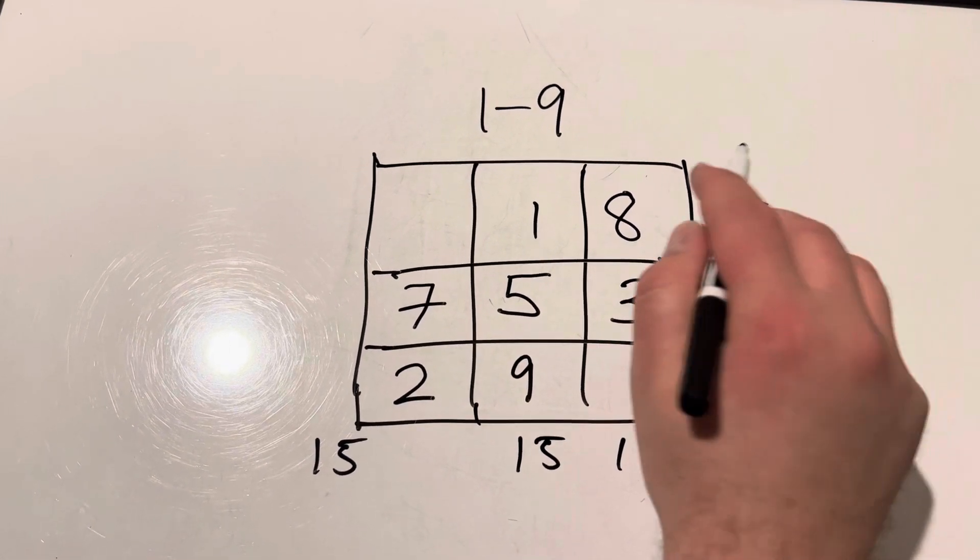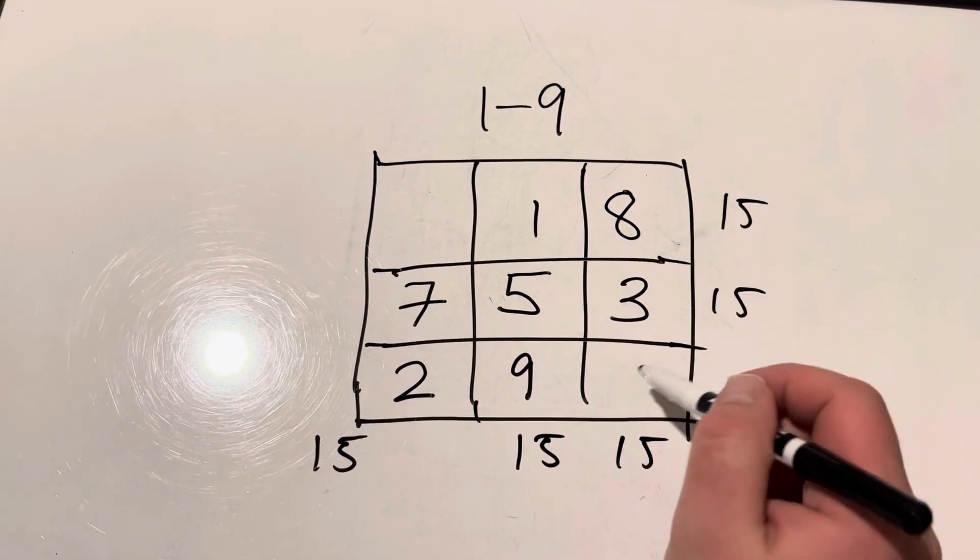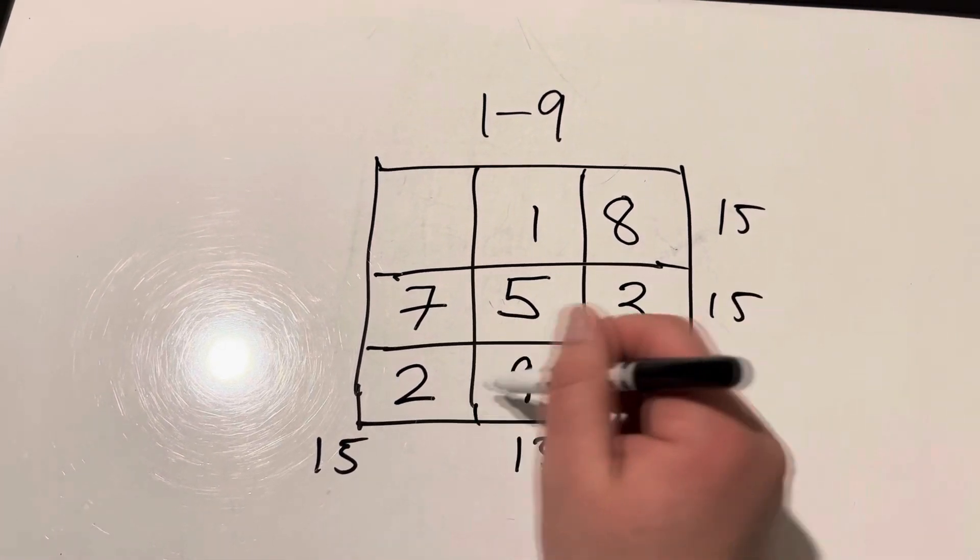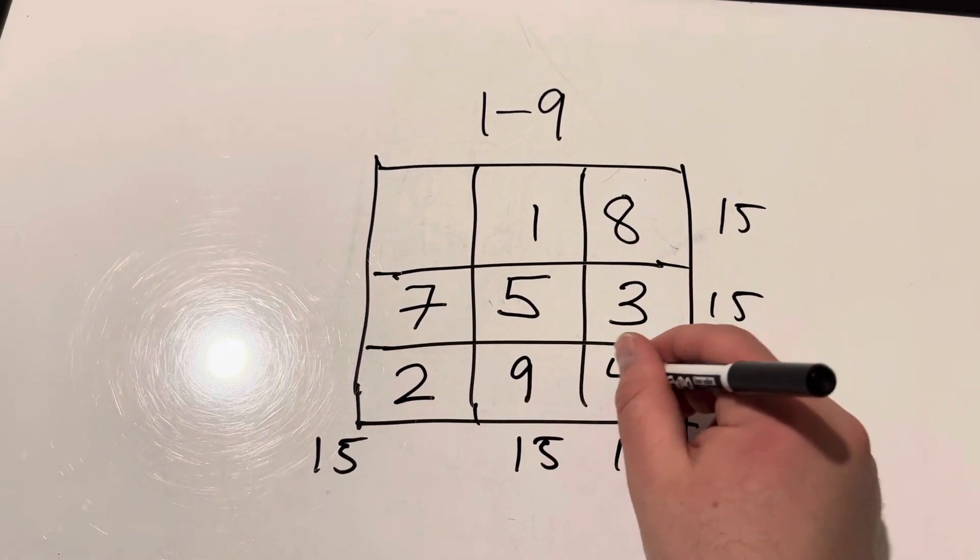Which leaves only four and six left. Now if we put six right here, that's gonna go way over. They're going this way and this way, so this is four, leaving six up here.